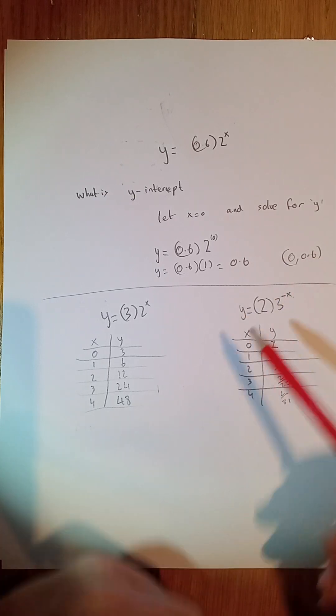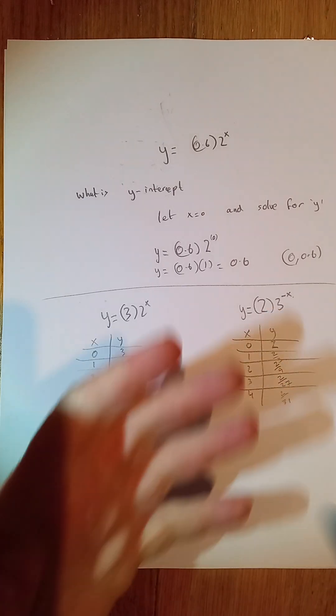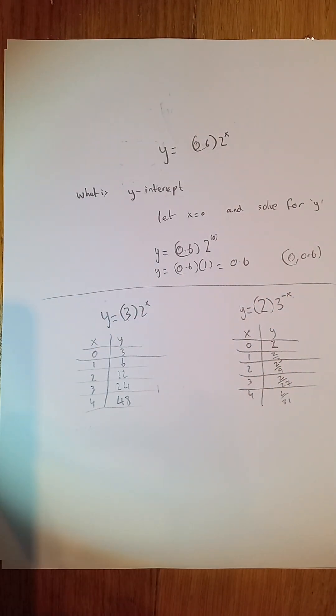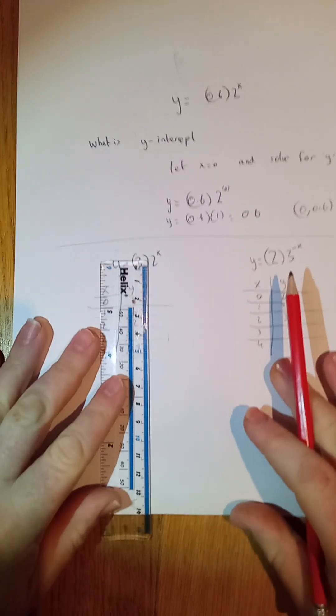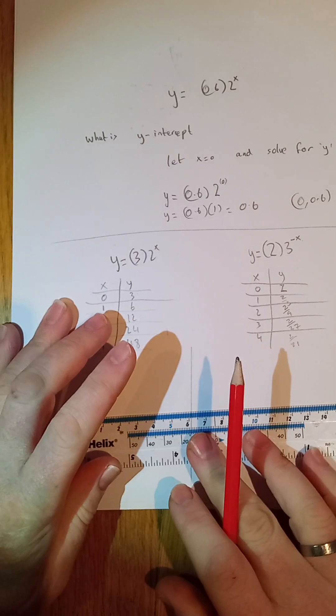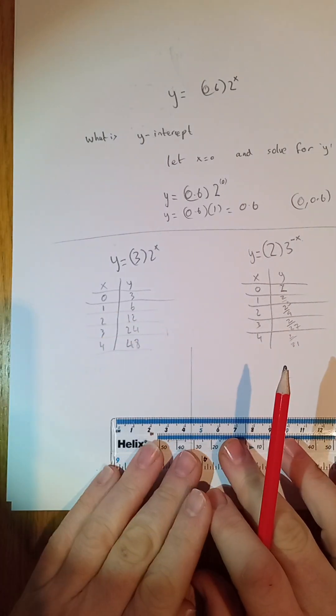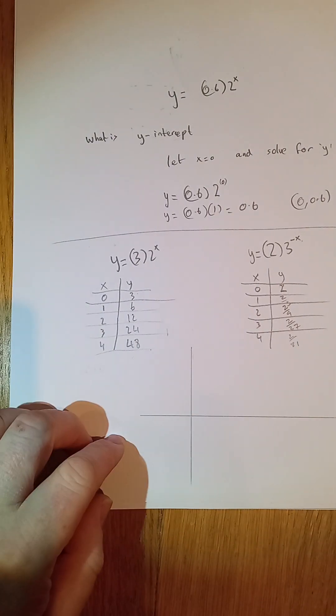So you can see this one is an increasing function and this one is a decreasing function. So how would I actually represent both of these? Well, listen, you'll have graph paper. I don't have graph paper here at the moment, but let's just give this our best shot.